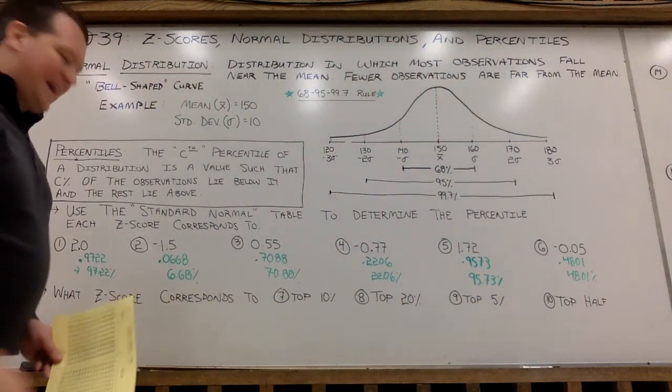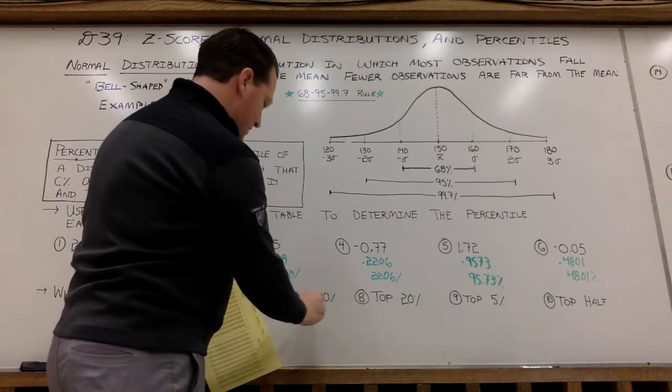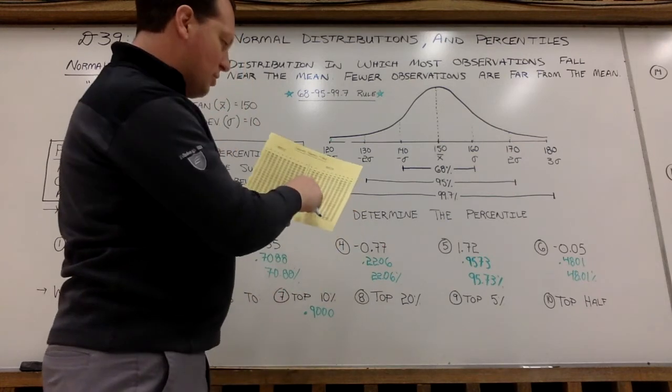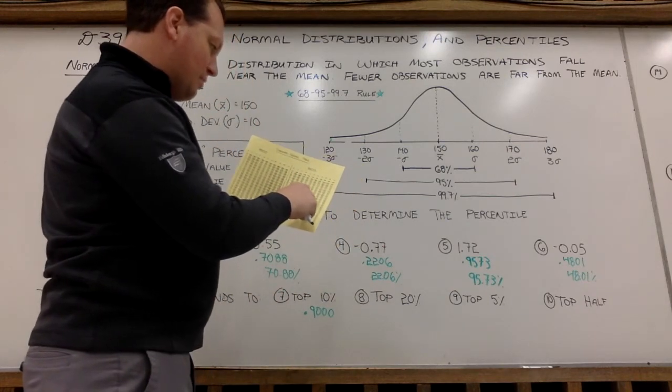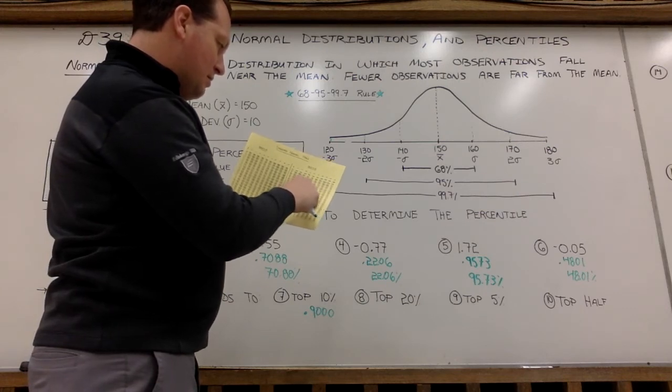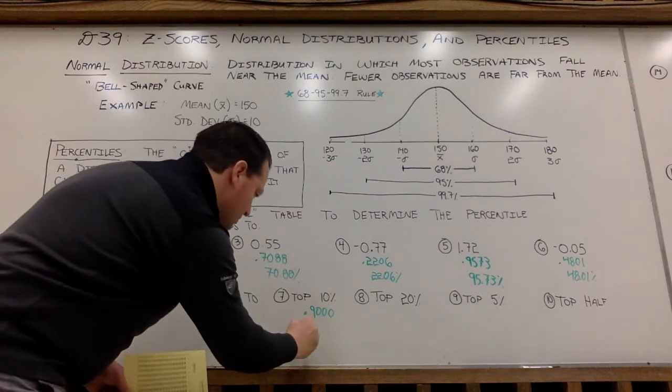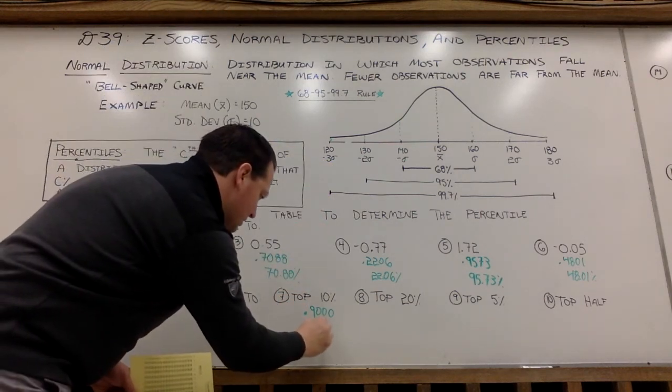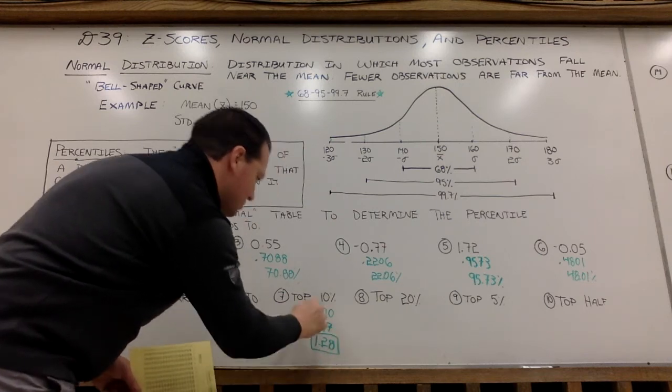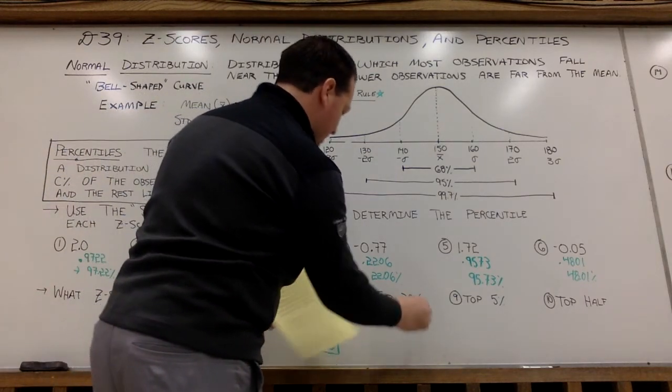We're going to work backwards here to find the z-score that corresponds to the top 10%. So I need to find the z-score that's closest to 0.900. So looking at my table, I see a 0.8997 at 1.28. So 1.28 would be the z-score that is closest to top 10%. Top 20%, 0.800, 80%.